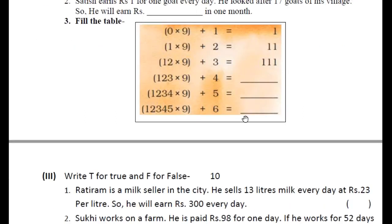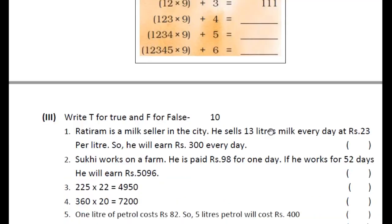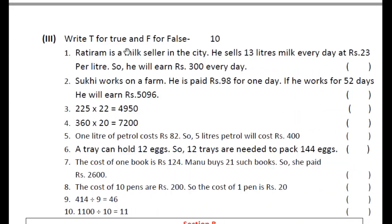Next: Fill the table. आपको एक table fill up करना है. यहाँ पर एक pattern है — उस pattern को follow करते हुए, जैसे one, then one-one, then triple one, उस तरह से table fill up करिए. True और false के लिए: जो statement true है उसके लिए T लिखिए और जो statement false है उसके लिए F लिखिए.